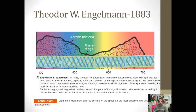The bacteria would congregate where oxygen concentration was highest — where photosynthesis was happening most rapidly. Looking across the wavelengths of the rainbow, Engelmann found the bacteria congregated in the violets and blues and over in the reds and oranges, while very few were in the areas of green light. This means plants prefer certain wavelengths over others — violet, blue, red, and orange — over green. That makes sense because most plants are green, meaning they reflect green light rather than utilizing it.